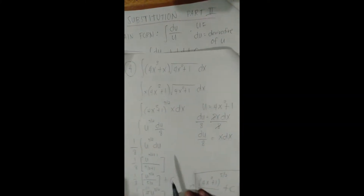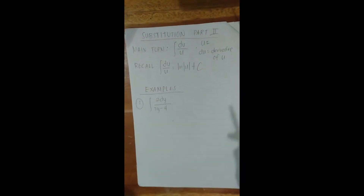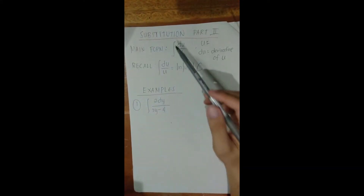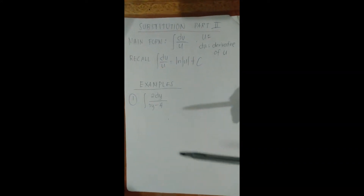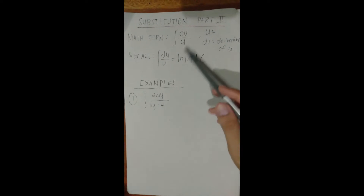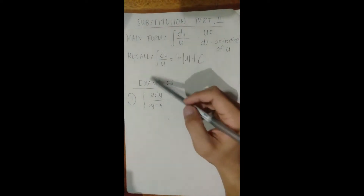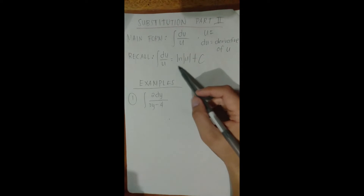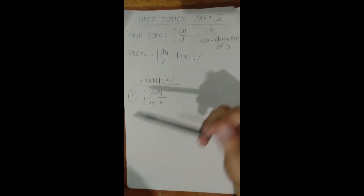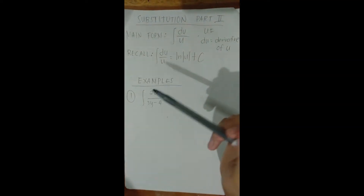Any questions so far? Let's move to part two. You may remember we discussed the integral of du/u. In this part we expand on that idea. This is also called the integration of a logarithm, because the integral of du/u equals the natural logarithm of u plus C, or ln|u| + C.